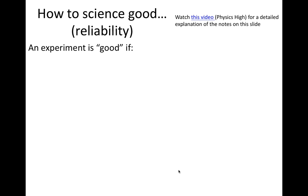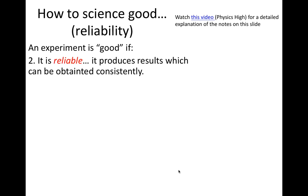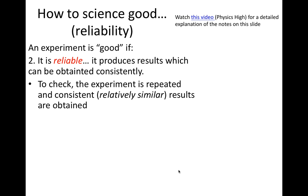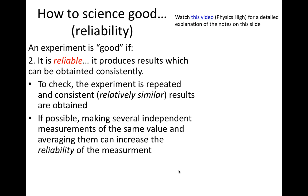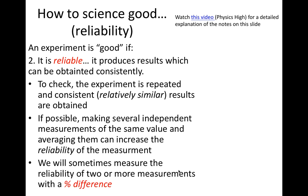The second aspect of a quality experiment is reliability. A reliable experiment produces results that can be obtained consistently, and a well-designed experiment will yield similar results if repeated multiple times. It's also often a good idea to try to measure the same thing in multiple different ways. For example, we might measure the weight of an object using different scales. If different scales report similar measurements, then we can be more confident that we are making high-quality measurements.